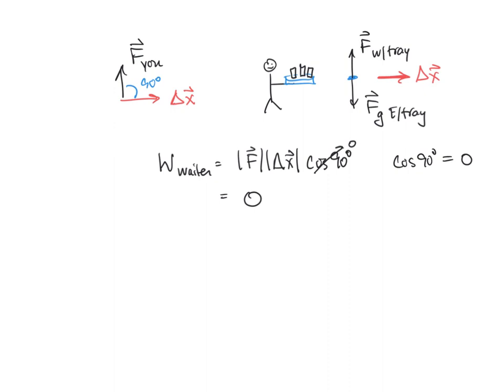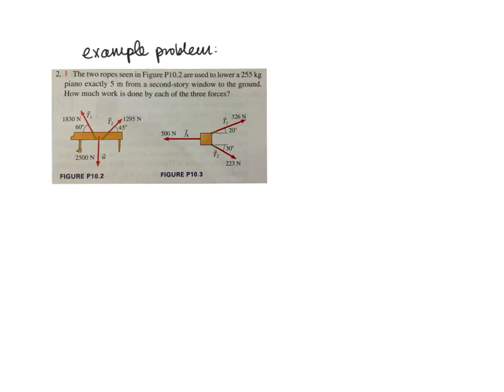Similarly, if you look at the gravitational force on the tray, that's also at a 90 degree angle. So the gravitational force of the earth on the tray is also zero.